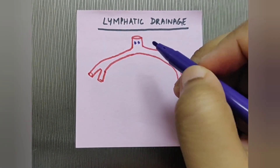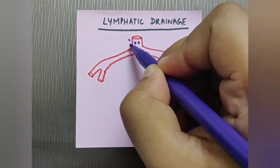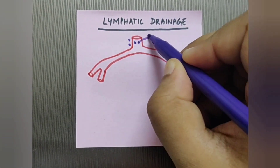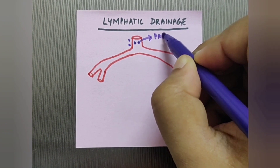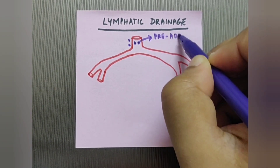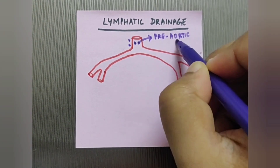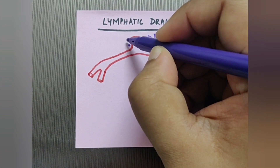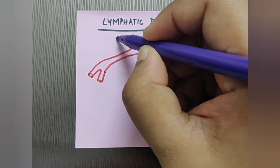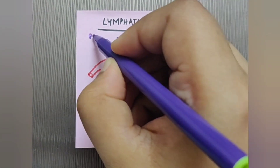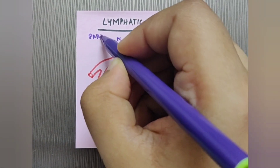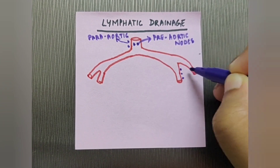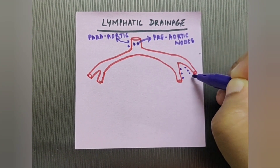Here I'm drawing the pre-aortic lymph nodes and the para-aortic lymph nodes. The pre-aortic lymph nodes are in front of the aorta, and the lateral aortic or para-aortic lymph nodes are on either side of the aorta.